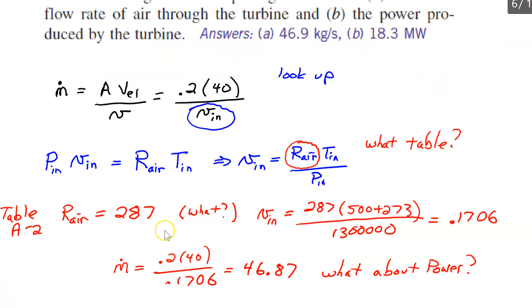So go ahead and do that and then I'll show you the correct answer. Okay, so you see I just took the 0.2, the thing that's in black is down here and then the little v I put in here and you calculate 46.87. Okay, so that's the first part. Now how are you going to get the power?